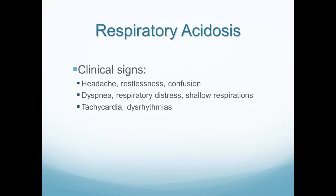Clinical signs of respiratory acidosis include headache, restlessness, and confusion — many symptoms are neurological because as the patient develops a respiratory acidosis, they also develop a high CO2 level, and CO2 causes vasodilation in the brain causing additional symptoms. Dyspnea, respiratory distress, and shallow respirations are related to the underlying respiratory problem. Tachycardia and dysrhythmias result from both the respiratory problem and the acidosis.